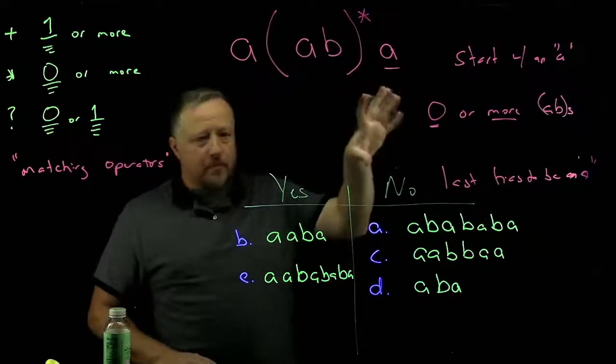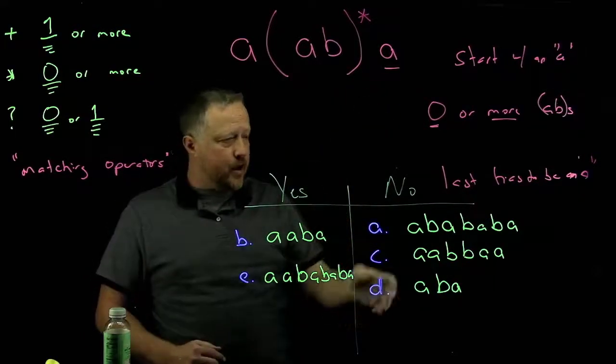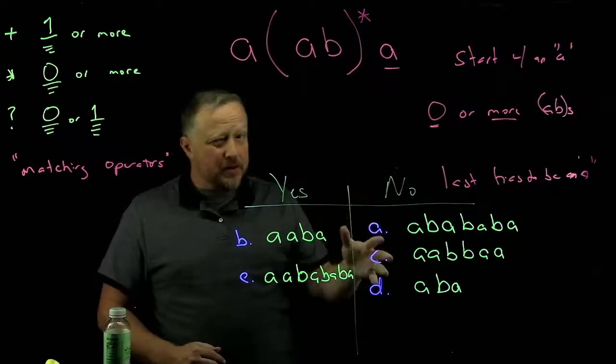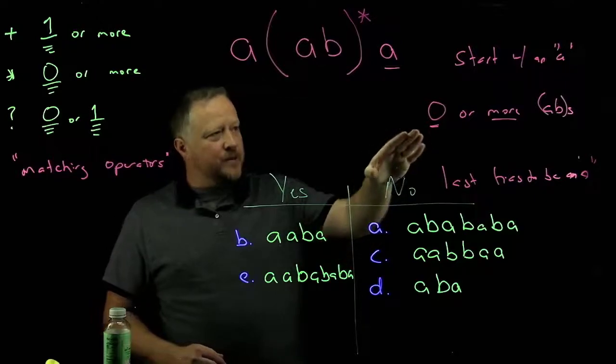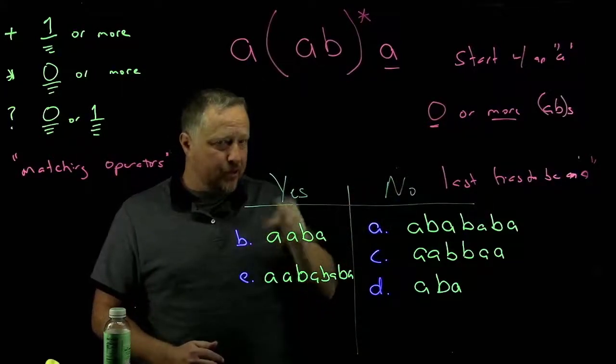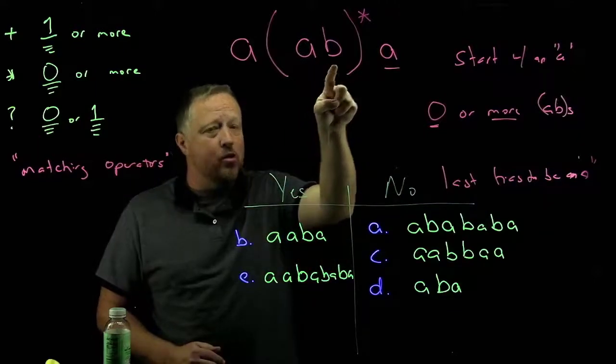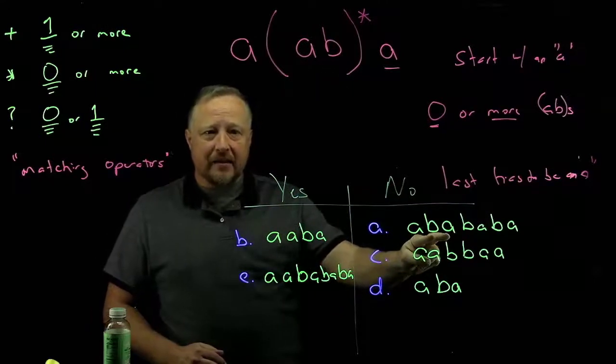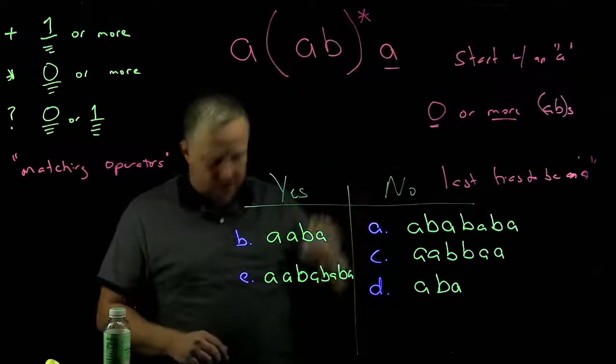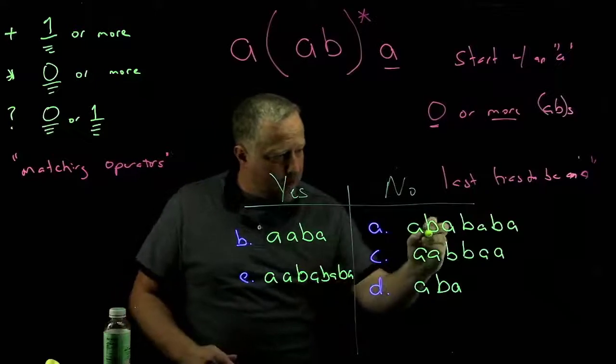So again, using my narrative in order to make sure we got this right, we have to start with an A, and all three do start with an A, but it must be something after that. It has to be zero or more A, B's. Notice I said A, B's, and they have to be in that order from left to right. So right off the bat, this one is bad because it starts with a B, A. That one's done, so it's really going to bomb right basically here.